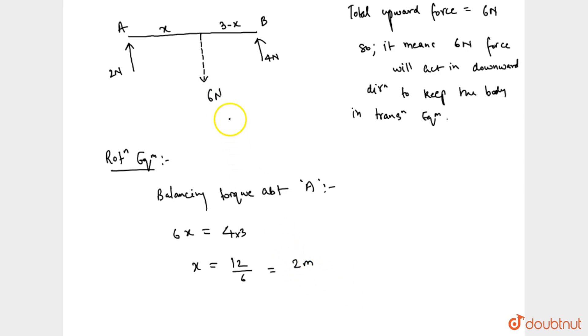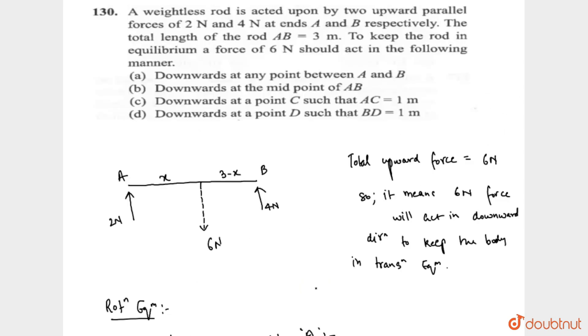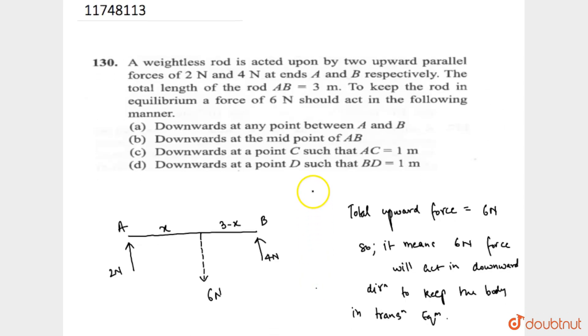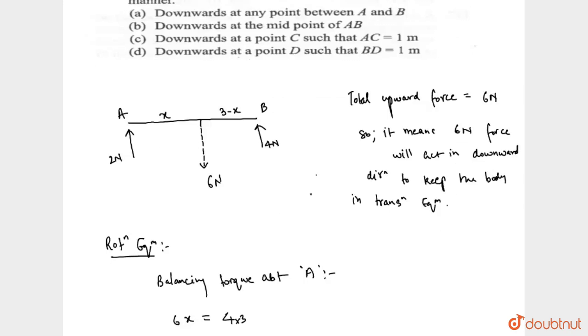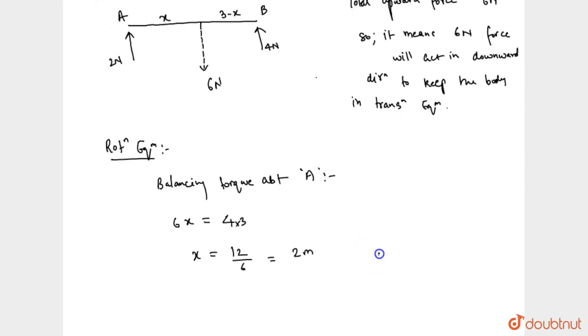यह 2 meter पे act करना चाहिए A से और B से act करना चाहिए 1 meter पे तो अपन option निकले. Downward at the point between A and B, downward at the midpoint of A and B, downward at the point C such that AC is equals to 1, यह भी गलत है, downward at the point D such that BD is equals to 1. तो अपना D option correct हो जाएगा. D option अपना correct answer होगा क्योंकि B से 1 meter है, A से तो 2 meter है.